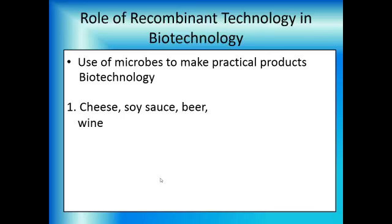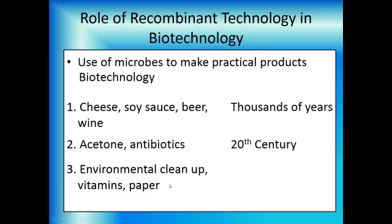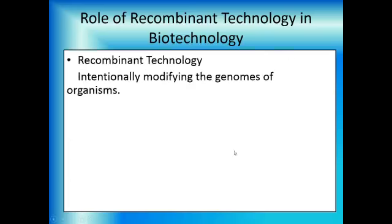Making cheese, soy sauce, beer, wine — all of that is biotechnology, and we've been doing that for thousands of years. More recently, we were able to grow organisms, obligate anaerobes, that were able to make acetone for us much more cheaply than we could in the lab. Also, growing penicillium mold and domesticating it so it produced much more penicillin than it did in the wild — we've been doing that in the 20th century. And recently, we've been able to come up with organisms that do environmental clean up, make vitamins for us, and make paper.